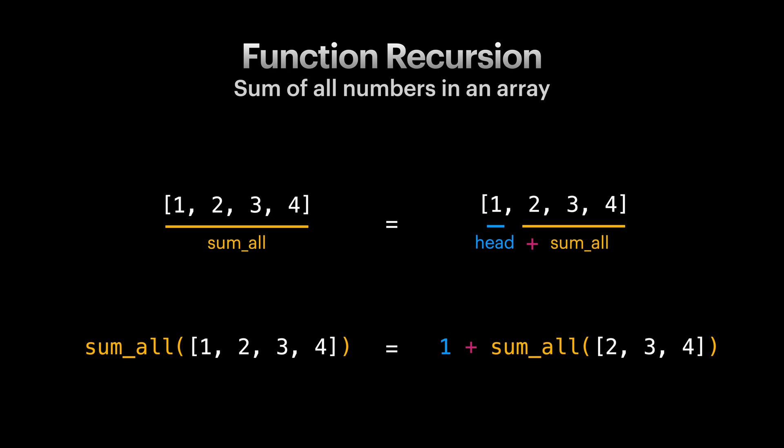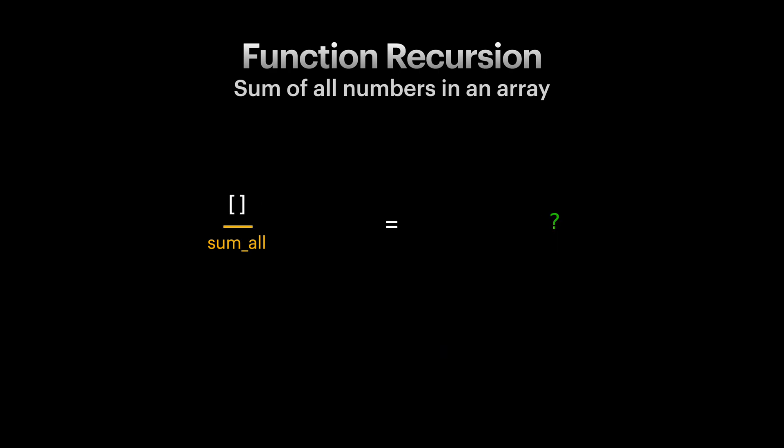What if our array is empty? Then there are no heads to pick. But in this case, we already know what sum_all function should return. Pause and try to think what is the value of sum_all on an empty array. You guessed it right. It's zero.